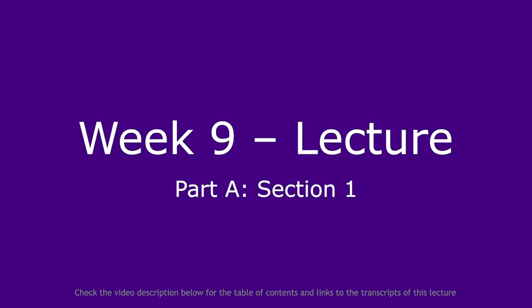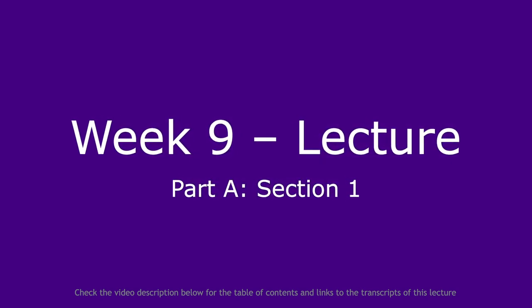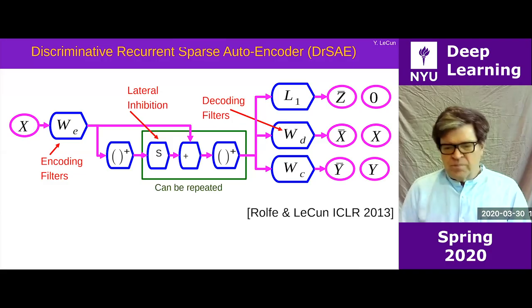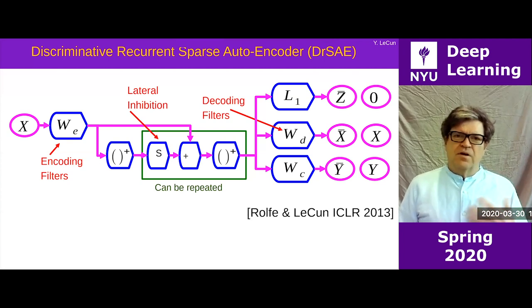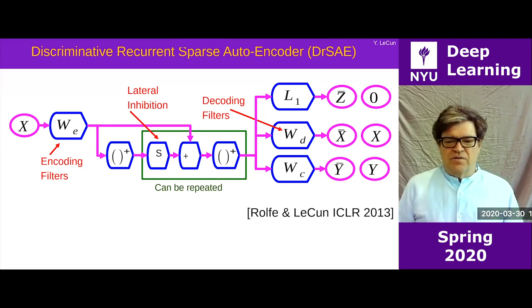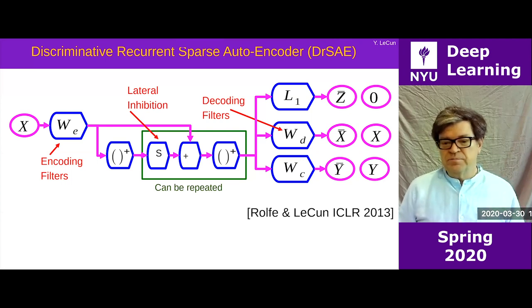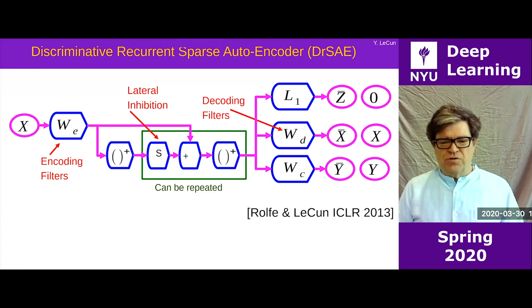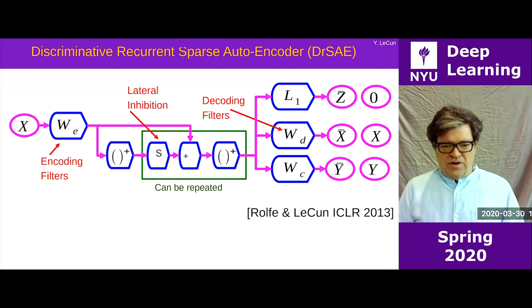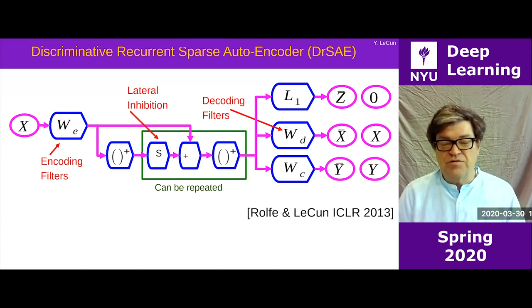One thing I talked about last time was sparse coding, and I'm going to mention just a very simple idea, which consists in combining sparse coding — the idea of a sparse autoencoder — with discriminative training. The architecture I'm showing you here: the encoder on the left is mostly similar to the encoder I talked about for the LISTA method.